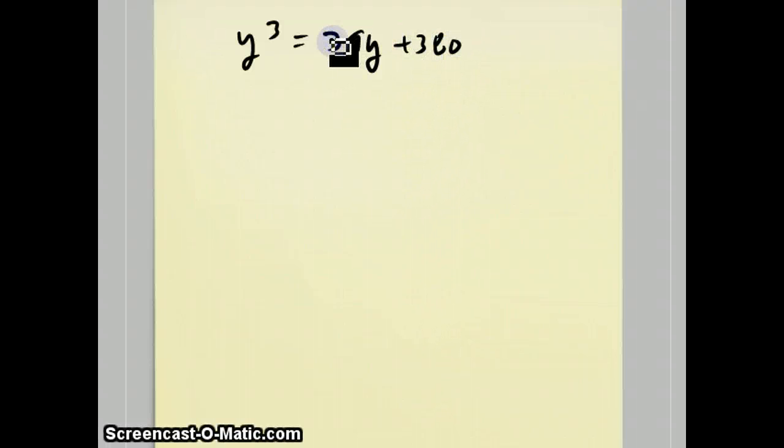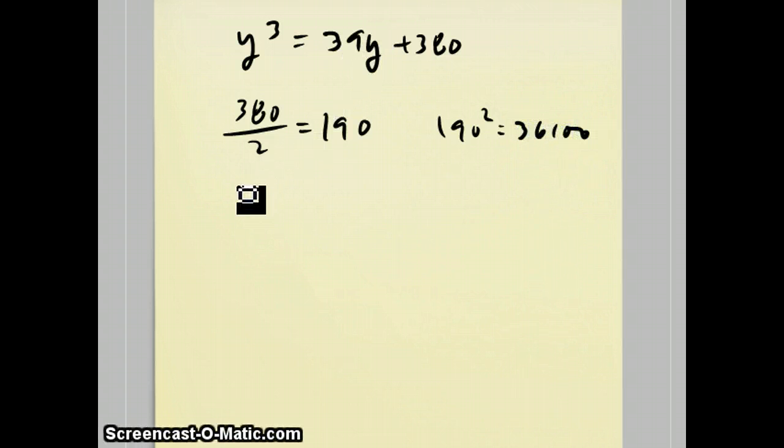And to just use the formula, what you do is you take the constant and divide it by 2 to get 190. That's part of the answer. We also square that. 190² is 36,100. We also take one-third of the coefficient on the linear term and we cube that to get 2,197.